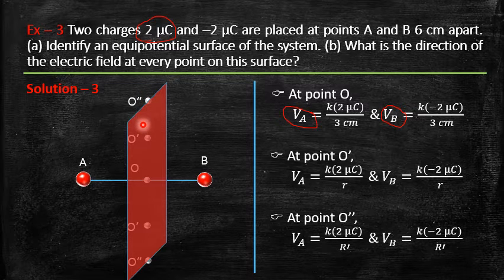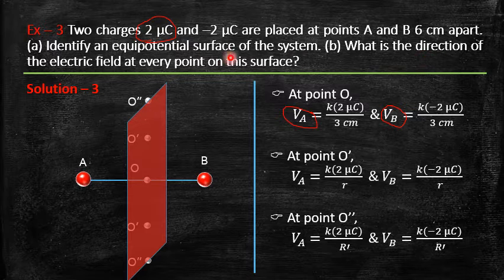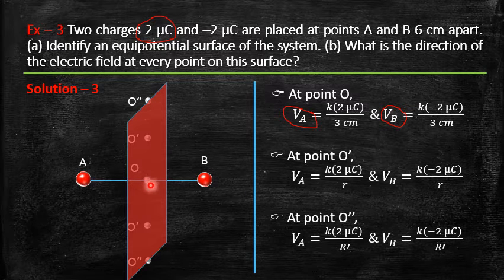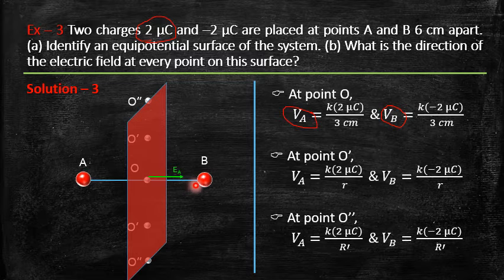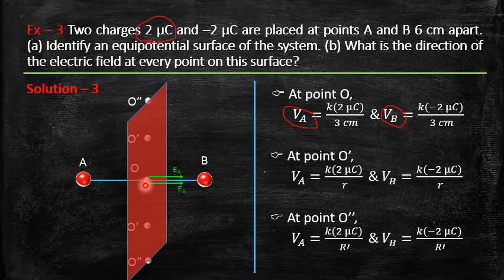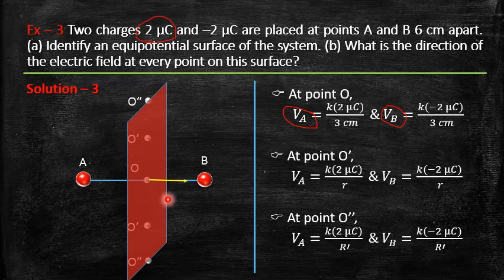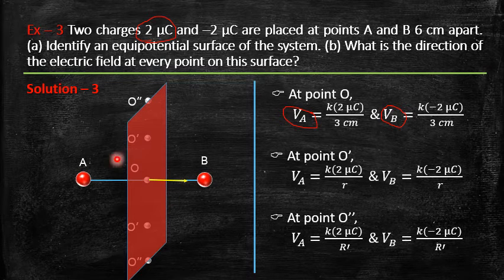The equipotential surface passes through the perpendicular bisector of the line joining A and B. Now for the direction of the electric field at every point on this surface: at point O, A is a positive charge so its electric field points away from A (toward O), and B is negative so its field points toward B. The resultant electric field at O points from A to B.